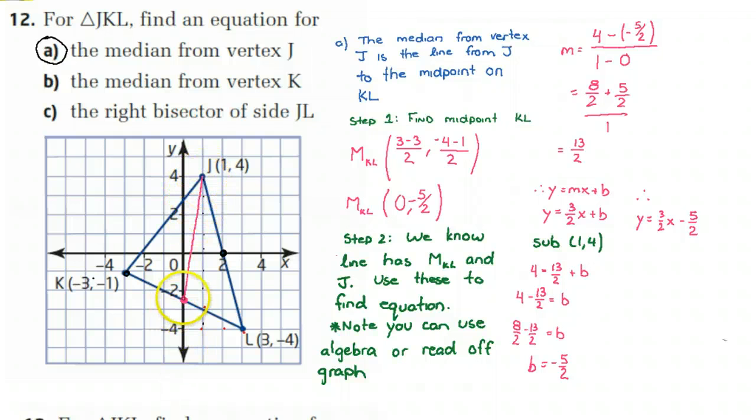So the first step in this problem is to figure out what is the midpoint of KL, and I've done that calculation right here. So I use my midpoint formula and I get the midpoint of KL is 0, negative 5 over 2, which if I look at this graph, that makes perfect sense.